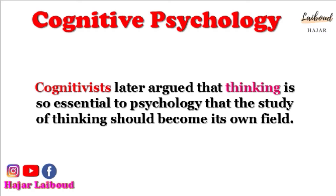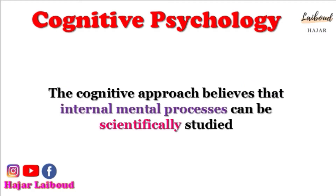Therefore, cognitivism became the dominant force in psychology in the late 20th century, replacing behaviorism as the most popular paradigm for understanding mental function. The cognitive approach believes that internal mental processes can be scientifically studied. In other words, cognitive psychologists believe that in order to understand a behavior, you have to understand what goes on in the brain to cause it. The cognitive approach pays more attention to what goes on inside the learner's head, focusing on mental processes rather than just observable behaviors.